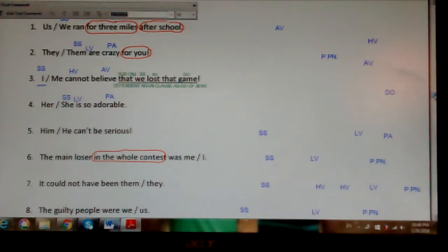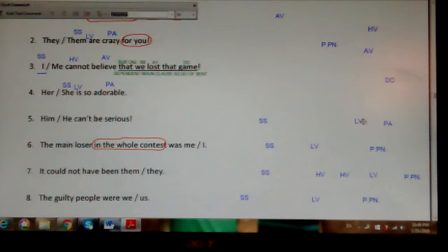Number five, by the way, adorable would be a predicate adjective in this case. Number five: him or he can't be serious. No prepositional phrase. My main linking verb be. I do have a helping verb here, can, not can't but can. Who or what can be serious? Again, I might use Jack. Jack can't be serious. Fred, Fred can't be serious. Maybe I need a pronoun in place of his name. Would I choose him or he? Since it's on the subject form, I would choose he. He can't be serious.